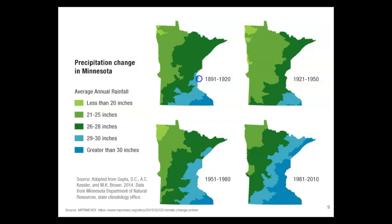Now I'm going to switch gears and talk about precipitation changes in Minnesota. These maps show historical data starting in 1891 and ending in 2010, and the trend is that Minnesota is becoming wetter. As we get wetter, things that used to be limited by precipitation really aren't as limited in the same way. More things can survive and more species that weren't invasive can become invasive.